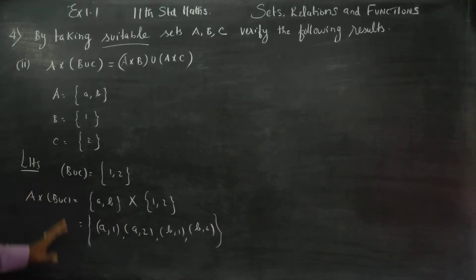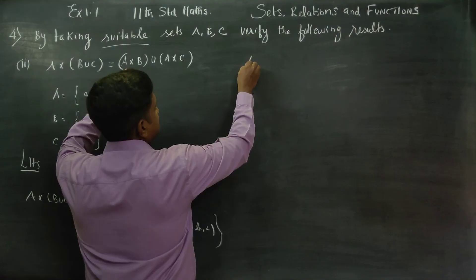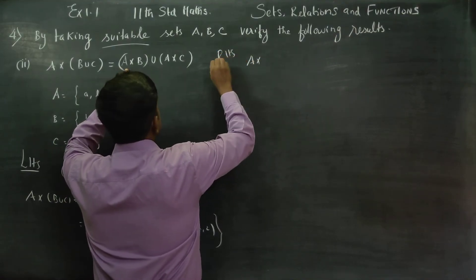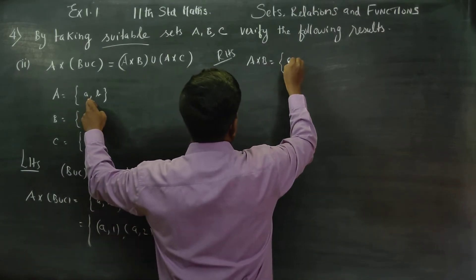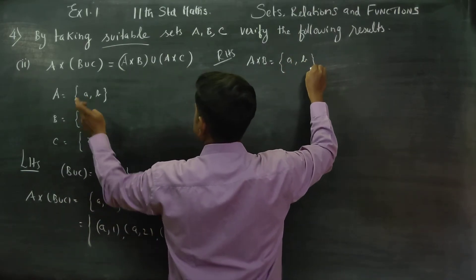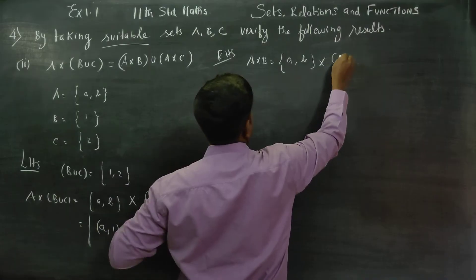This is our LHS. Then going to RHS. First I want A cross B. I want first my A cross B. What is my A set? {a, b}. What is my B set? Cross just 1.